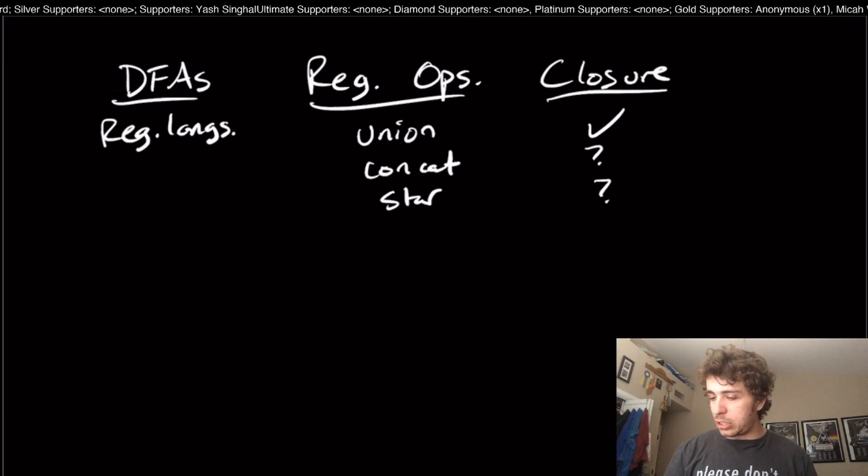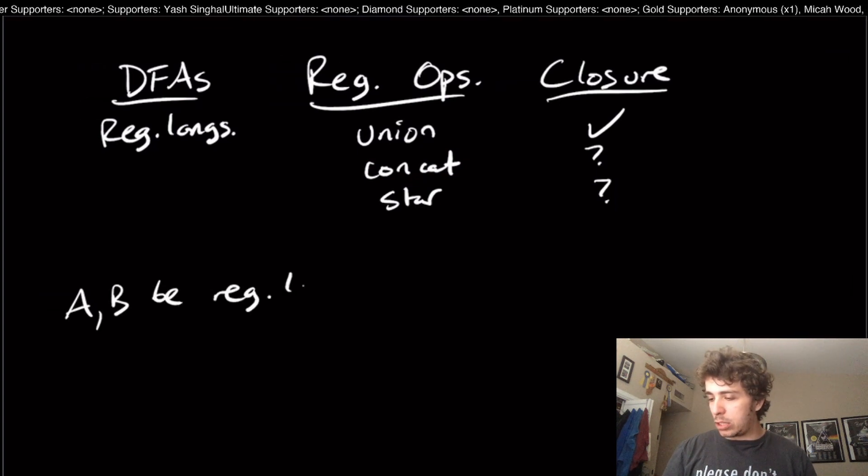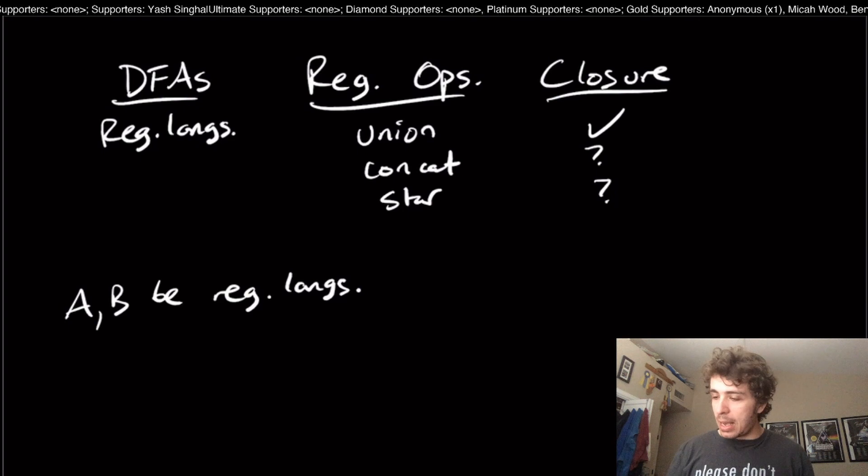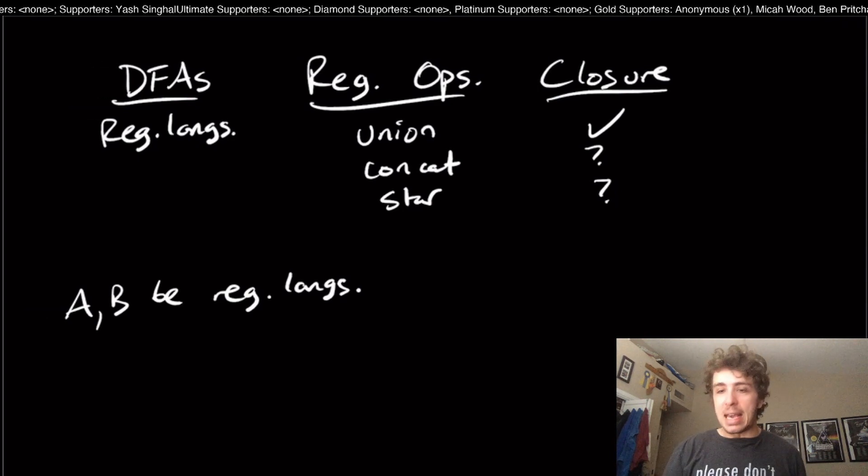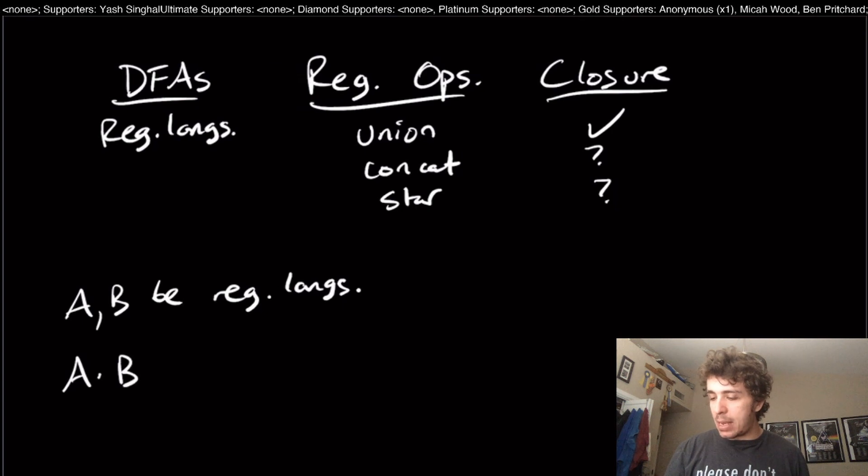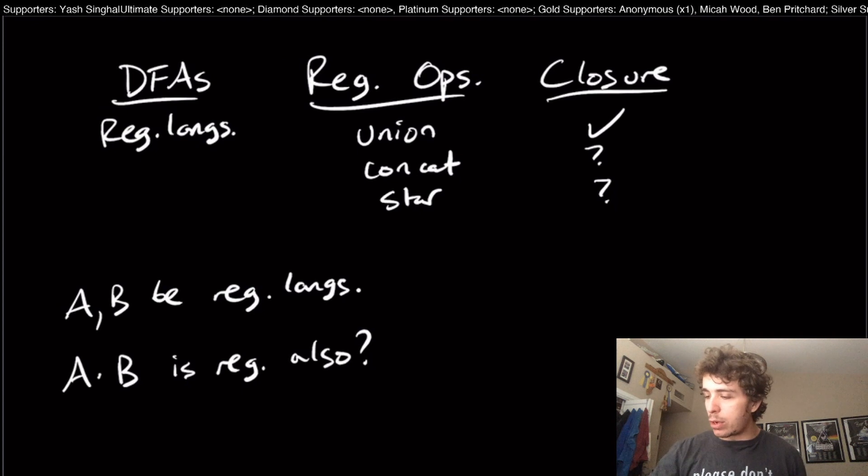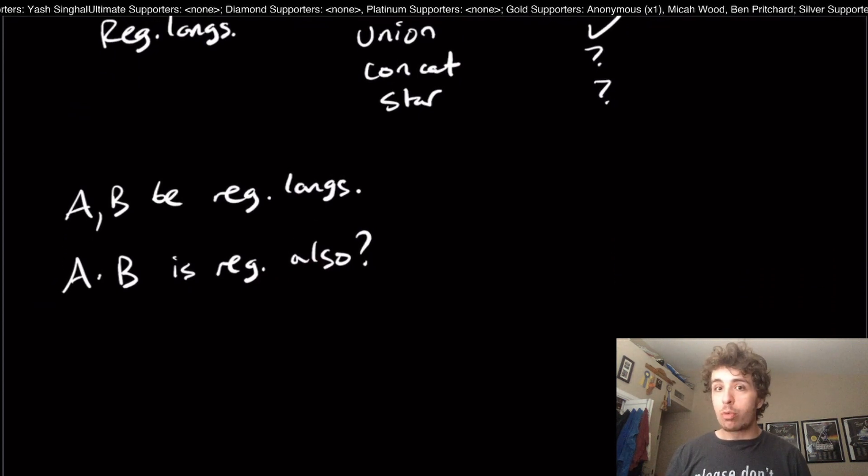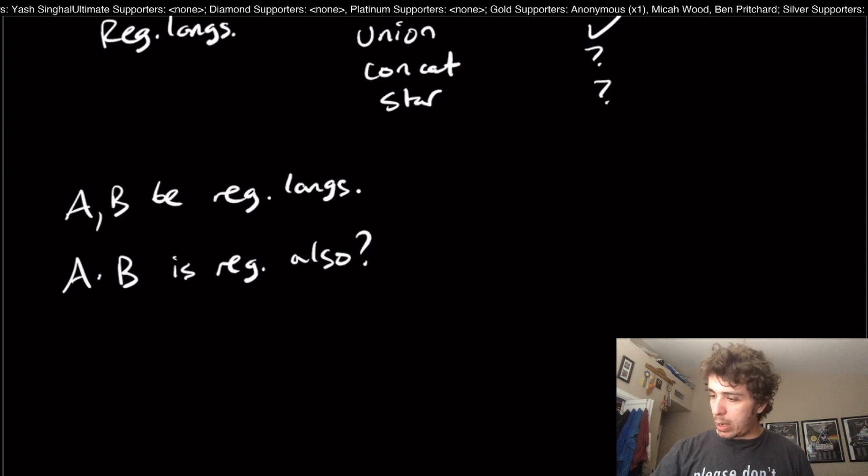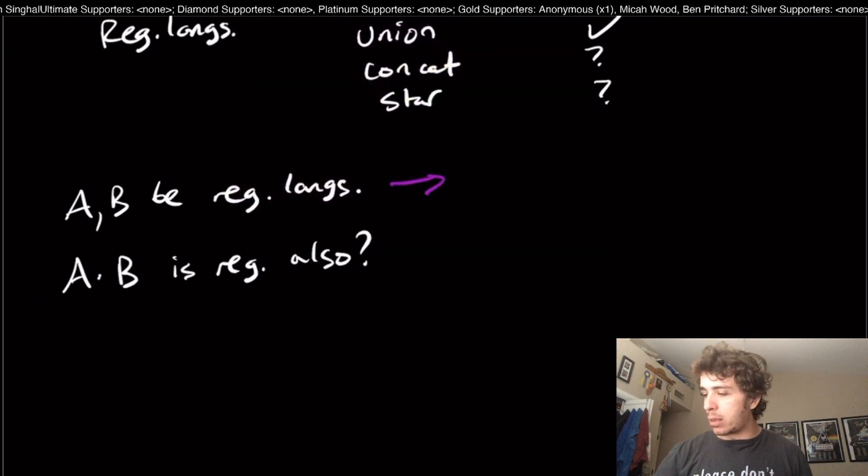Let's just see: let A and B be regular languages and see if we can show that A concatenated with B is regular also. We don't know that this is true; we haven't shown that this is true.